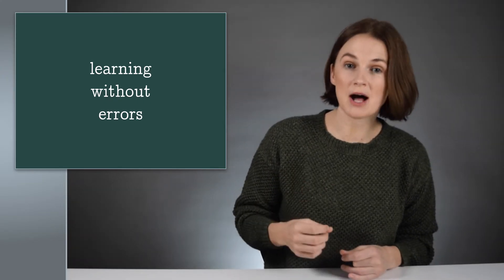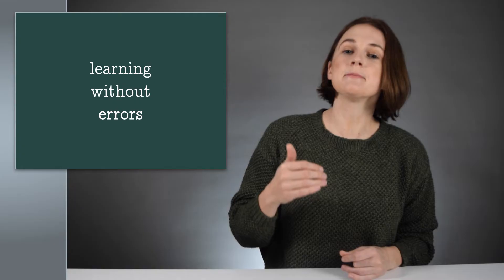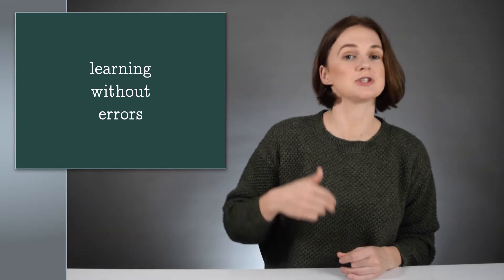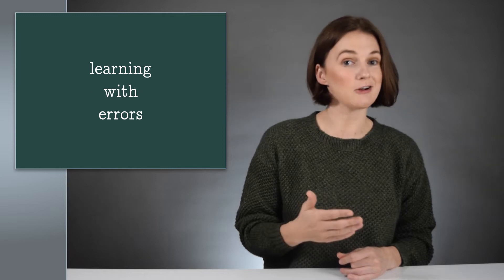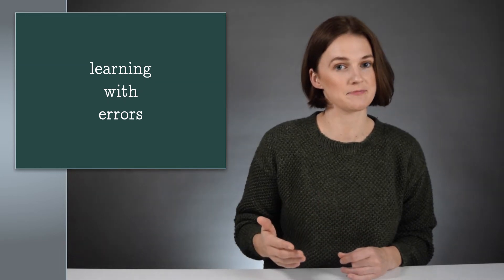But we can slightly modify the public information to make it much more challenging to deduce the secret information by incorporating the errors in learning with errors. I'm going to pick random whole numbers that are pretty close to zero and add them to the right side of each equation. These numbers are the red errors, and they're also secret. Let's combine the correct answer and the errors. Now, these equations are the public information.